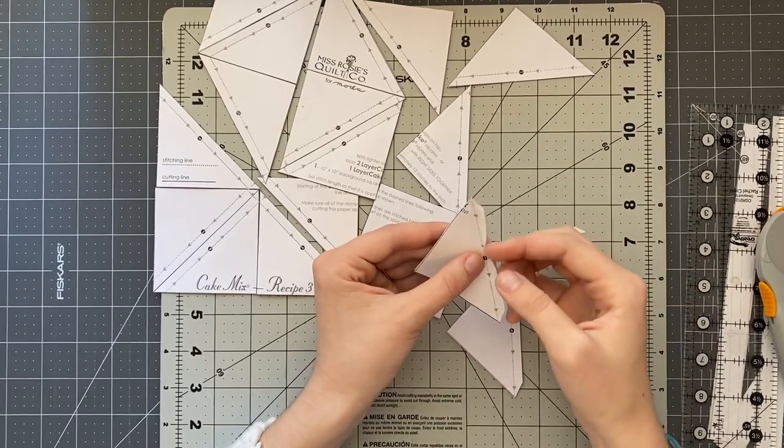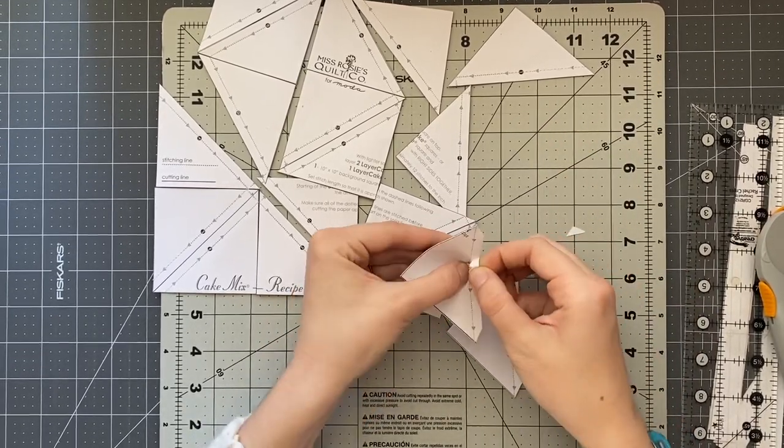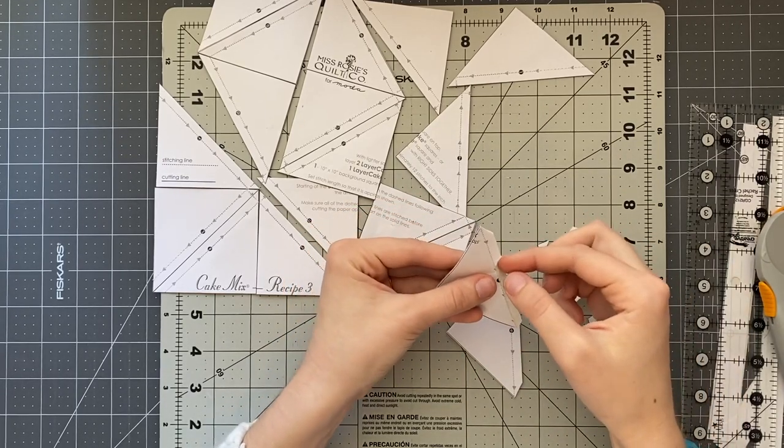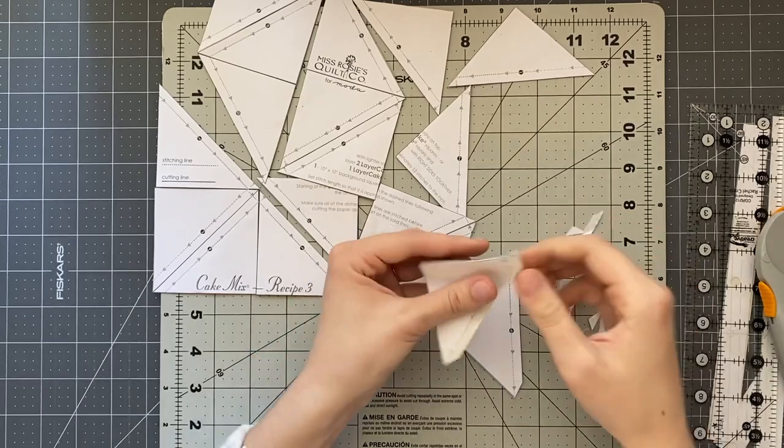And then because we use our smaller stitch length this paper will be easier to rip off so I'm just going to take, I'm right-handed so I'm going to take this smaller piece in my right hand and put my two thumbs together and just kind of rip it that rips off half and then I'm going to rip off the other half.